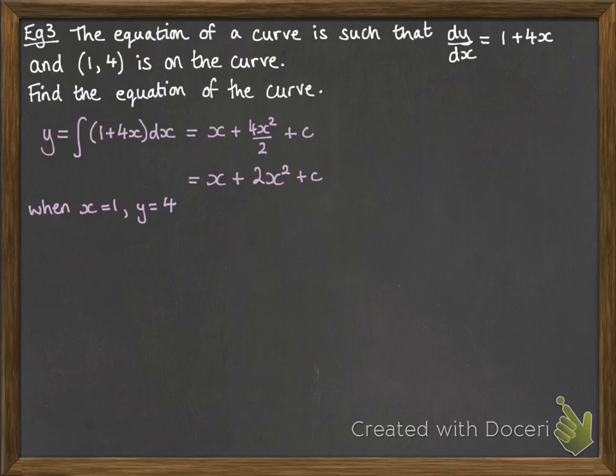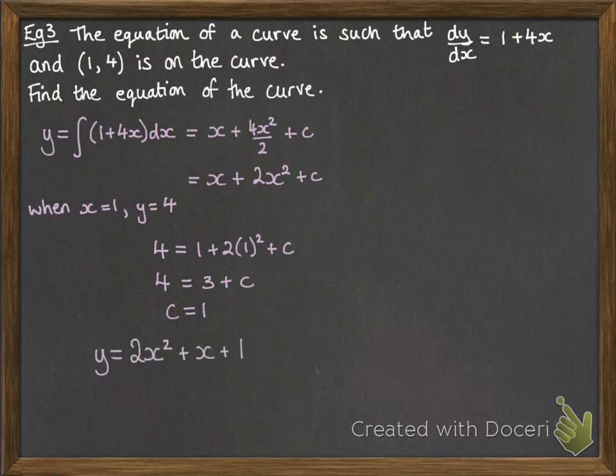So x equals 1 and y equals 4 gives us this equation. So just substituting into that y equation we've got above. So 4 must be equal to 1 plus 2 times 1 squared plus c. So if we work that through, c has to be 1. So our final answer for the equation of the curve is that y equals 2x squared plus x plus 1.